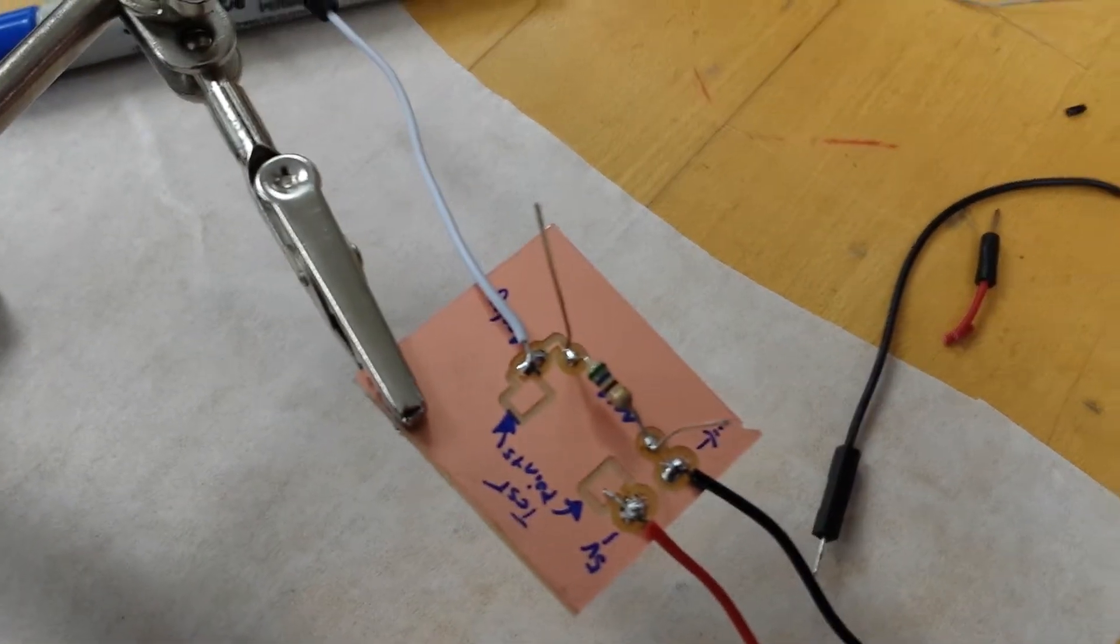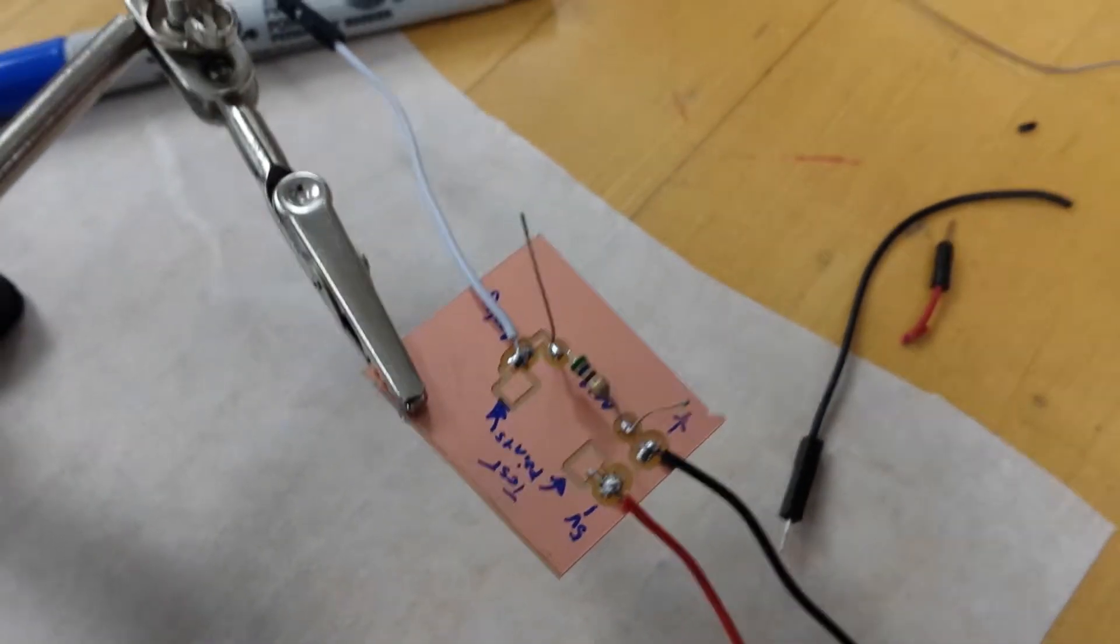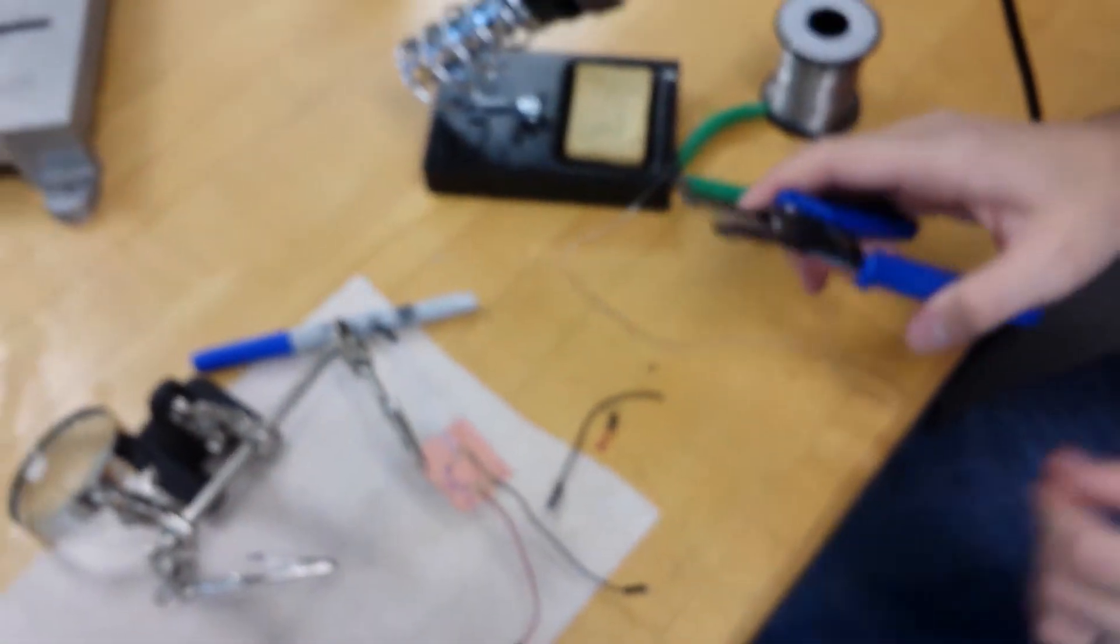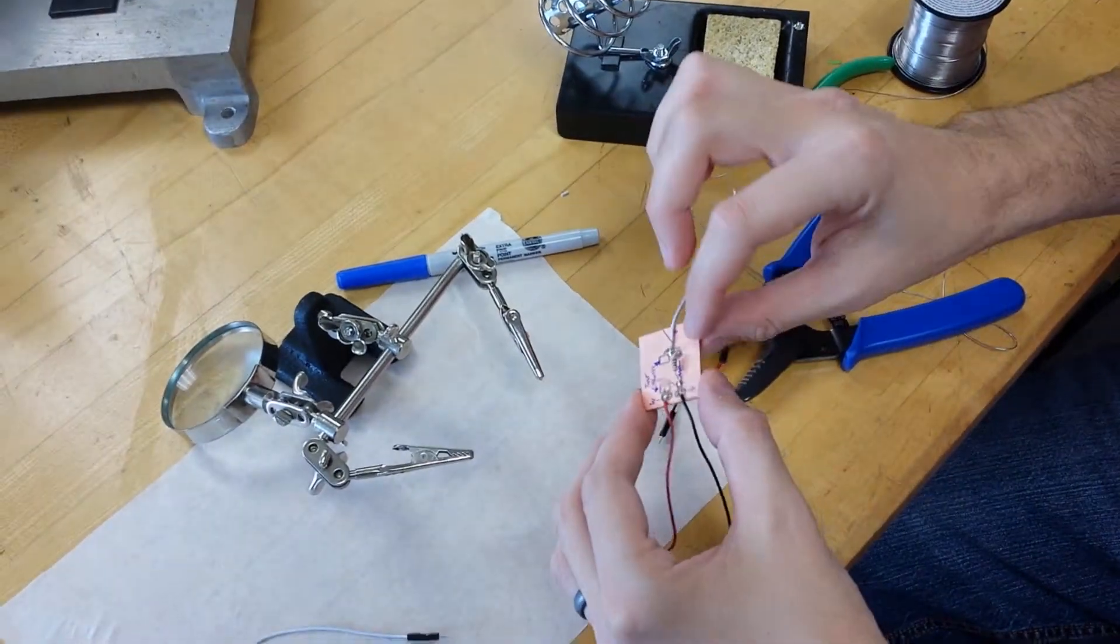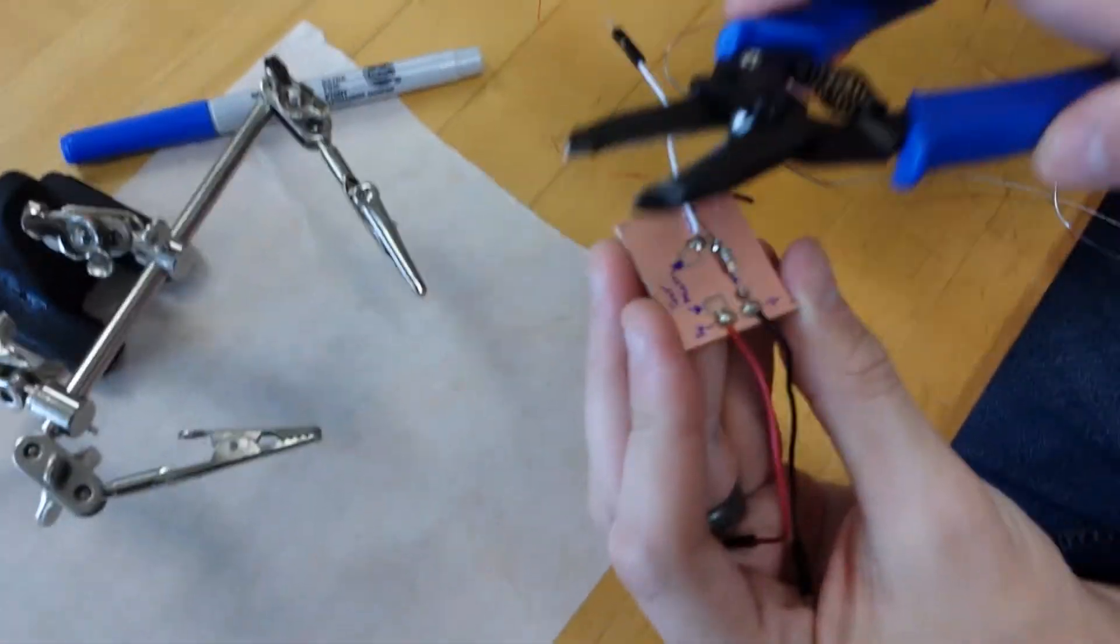So after you've done this you want to take a pair of diagonal cutters or wire cutters and snip off the excess wires from your resistor.